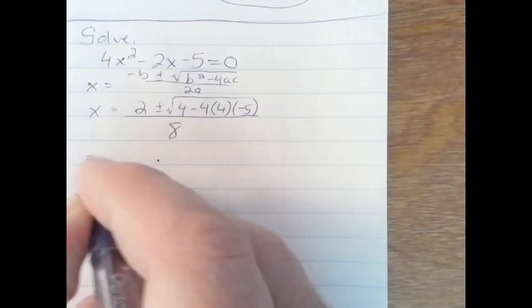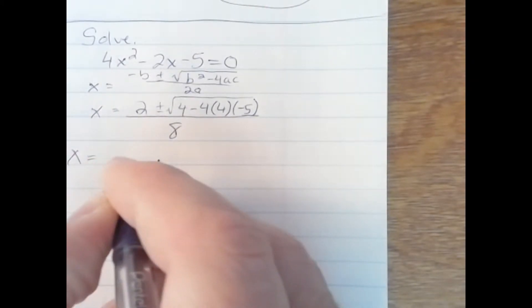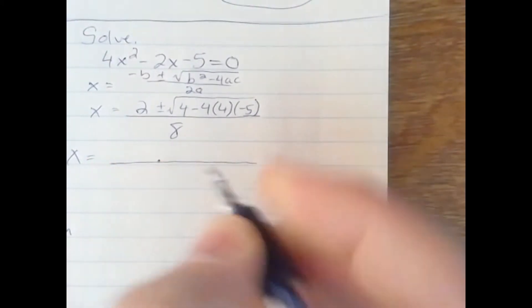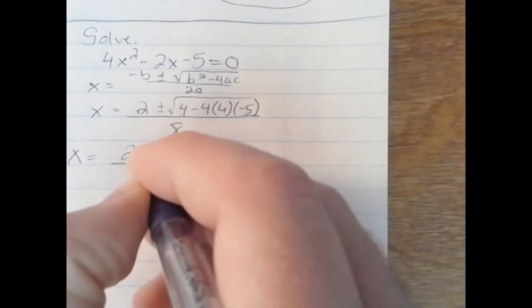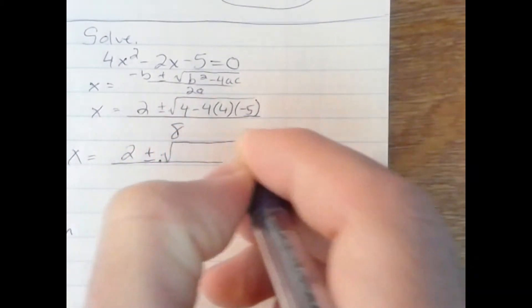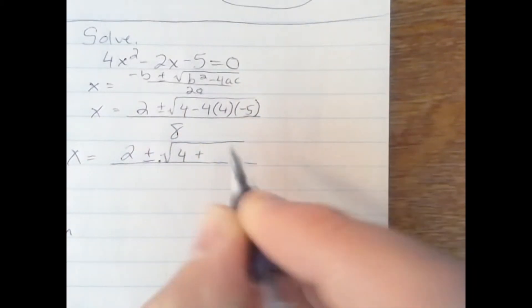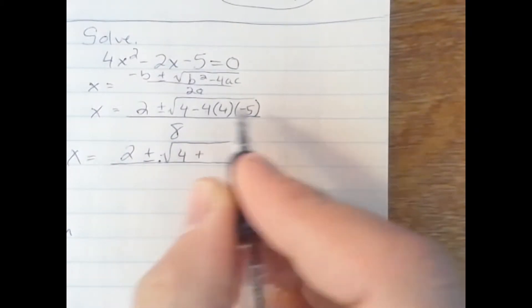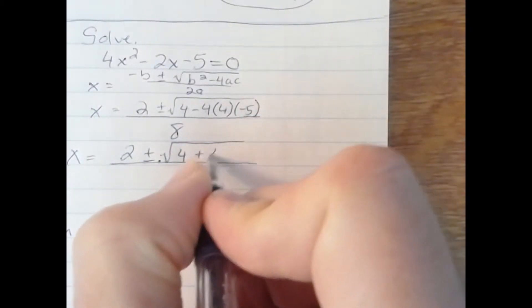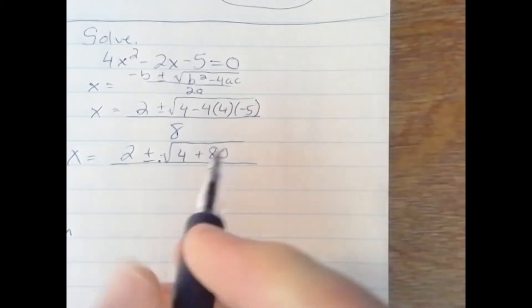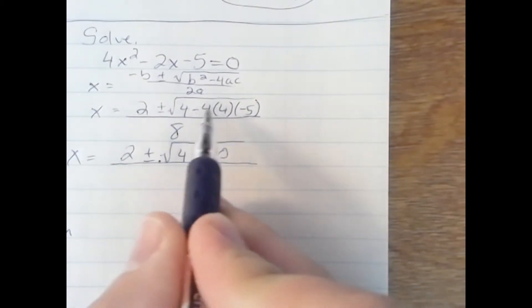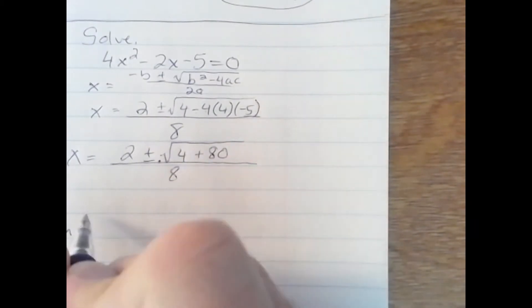So let's simplify even further. 2 plus or minus square root 4 plus 4 times 4 is 16, 16 times 5 is 80. And I know it's plus because I'm subtracting a negative quantity all over 8.